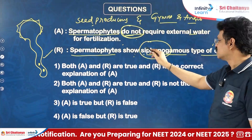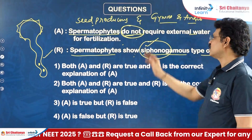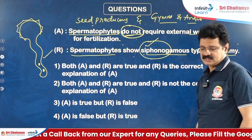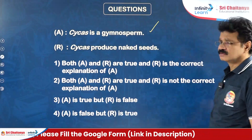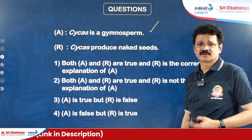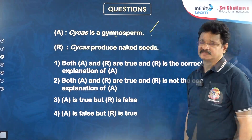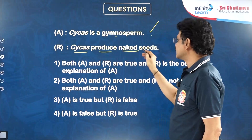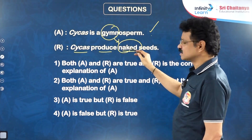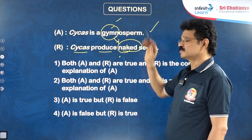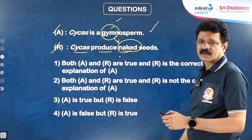Next question: Cycas is a gymnosperm. Statement is true — Cycas, Pinus, Ginkgo, Gnetum are examples for gymnosperms. Reason: Cycas produces naked seeds. Gymno means naked — presence of naked seeds or naked ovules is the characteristic feature of gymnosperms. Both statements are true and reason is the correct explanation — first option. Next question: Endosperm is haploid in gymnosperms, whereas in angiosperms endosperm is formed after fertilization and is triploid. Overall statement is true.